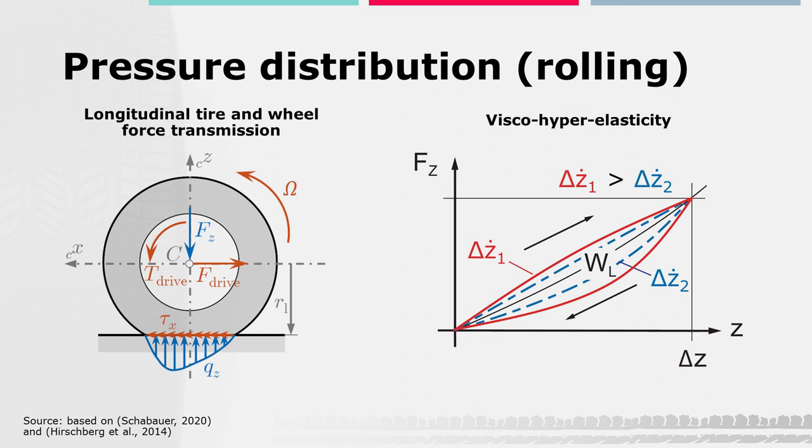Viscous effects are velocity-dependent effects, which means faster compression leads to higher forces and therefore to a larger hysteresis and higher losses, which are represented by the area within the hysteresis Wl. The amount of hysteretic loss at a certain deflection rate is mainly determined by the structure and material properties of the tire.